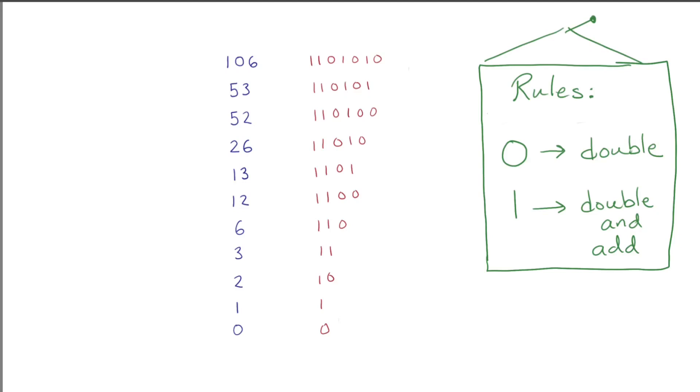We also actually quickly get an analysis of the runtime of the algorithm. The total number of operations is the number of digits, how often we double, plus the number of ones, that's how often we add.